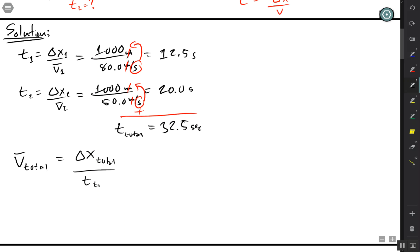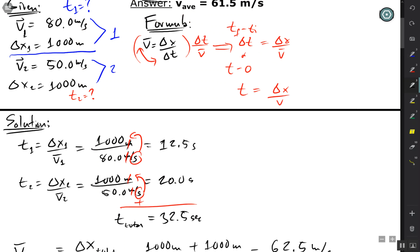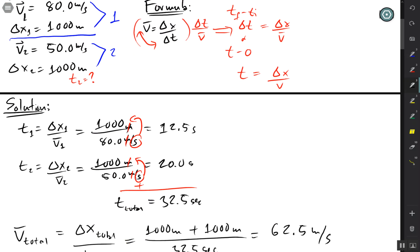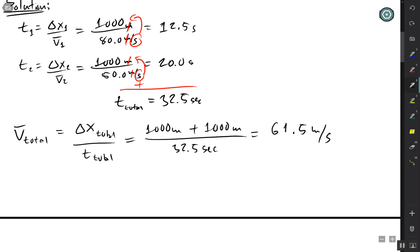So everything is totaled out. This would just be 1000 plus 1000, or 2000, and our time is 32.5 seconds. We're going to get an answer of 62.5 meters per second, but I believe... wait, no, 61.5, sorry about that. And there we go.